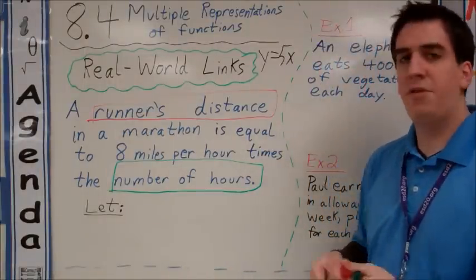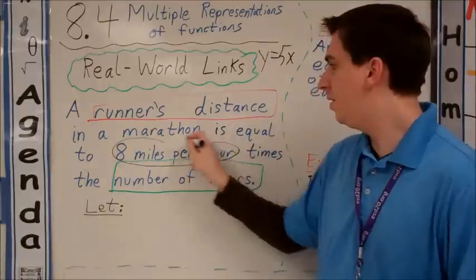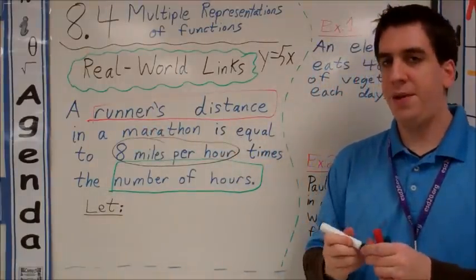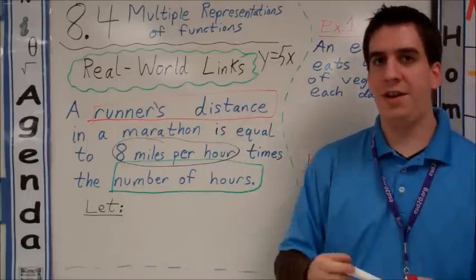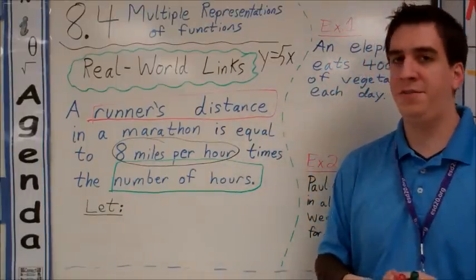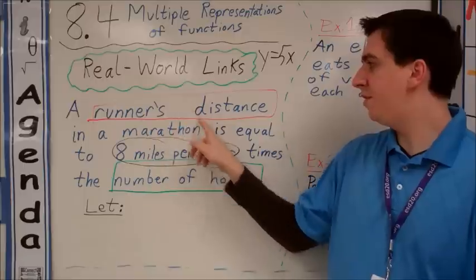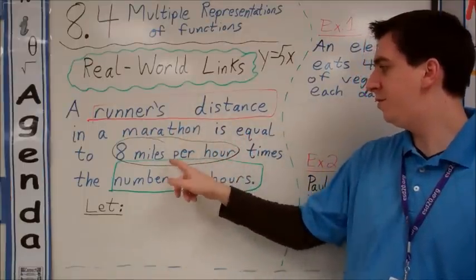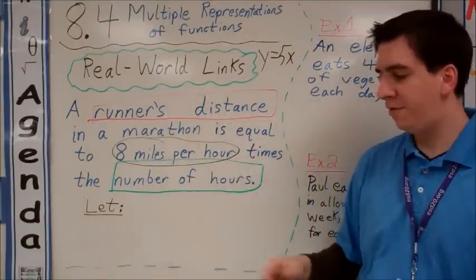Our other piece of important information here is the 8 miles per hour. We're going to use all of this information to make a linear equation just like your y equals 5x from before. But let's look at this: the runner's distance in a marathon is equal to 8 miles per hour times the number of hours.